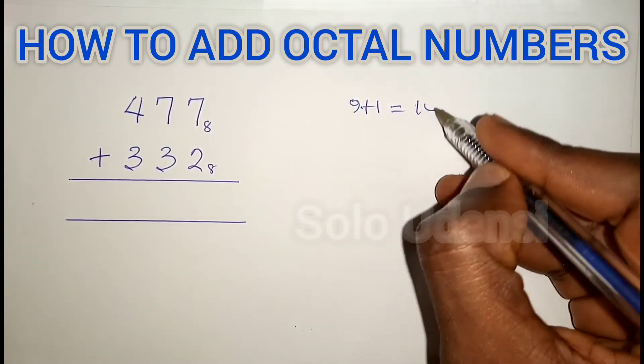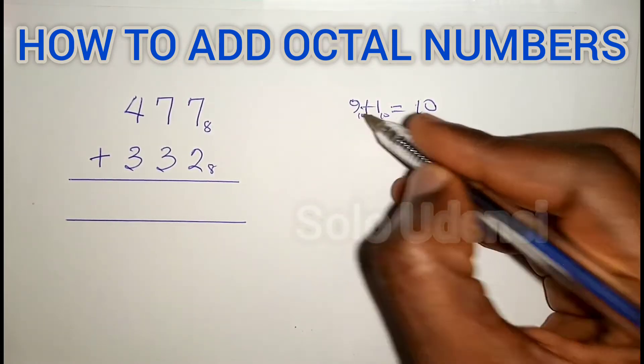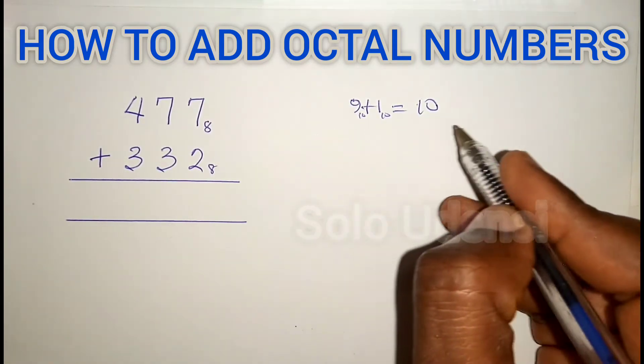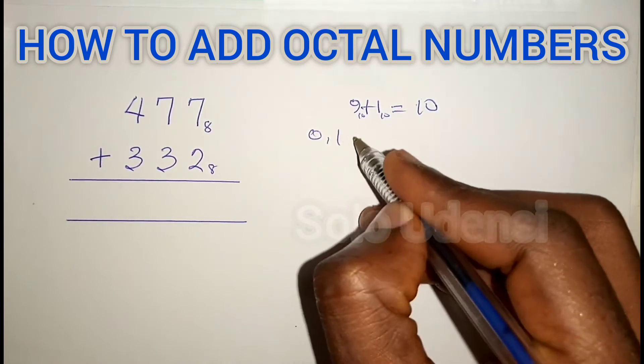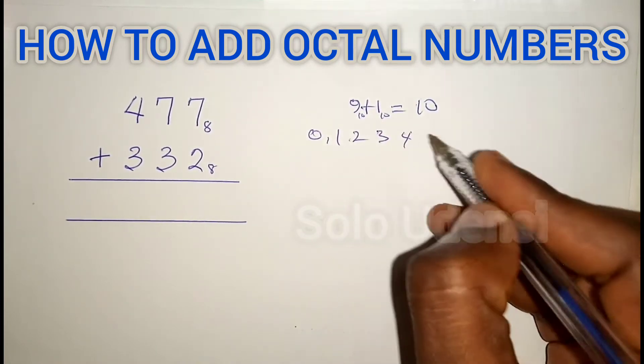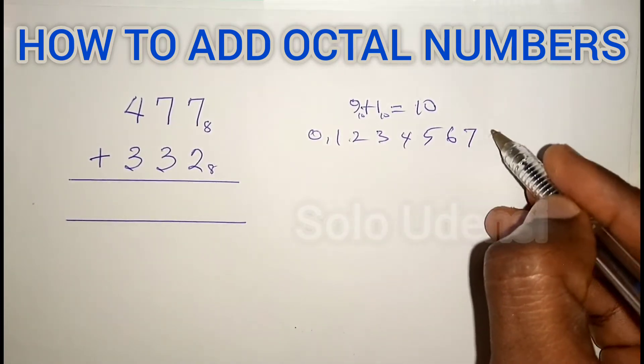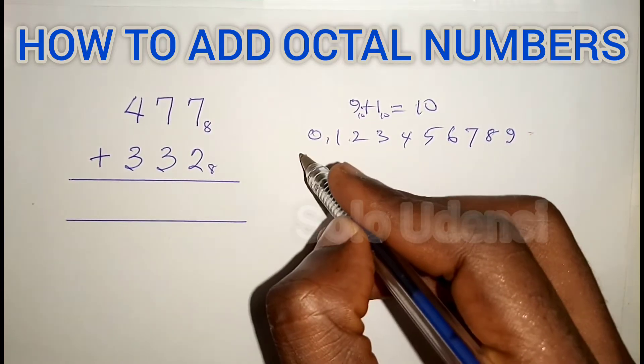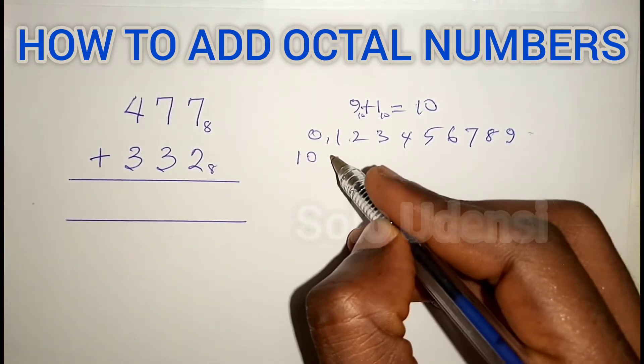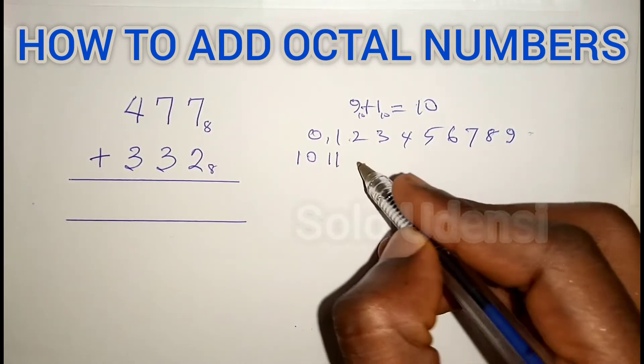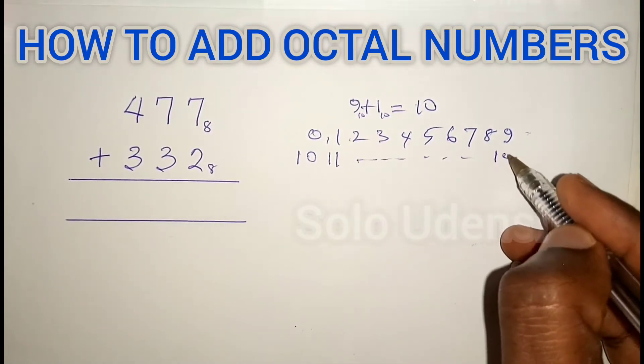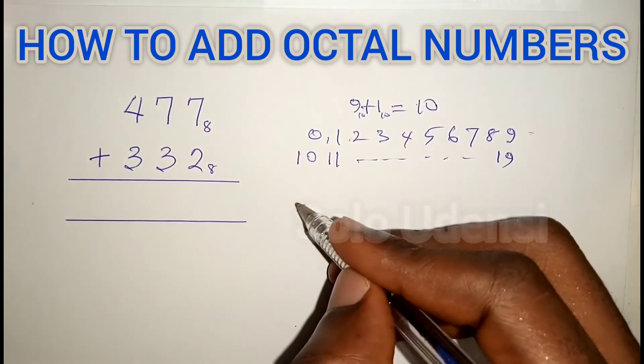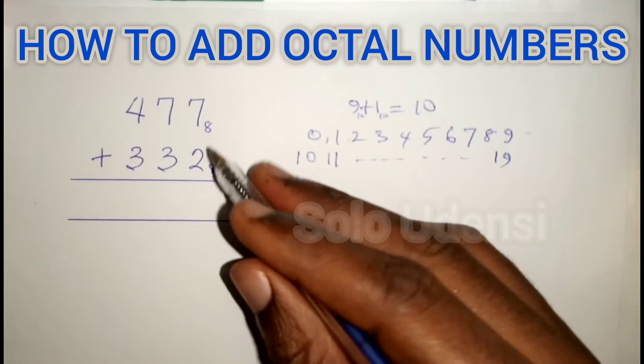That's in base 10. This number system has 0, 1, 2, 3, 4, 5, 6, 7, 8, 9. The tenth one we call 10, the eleventh 11, and so forth. At 19 we continue to 20, until we reach 99, then we start 100.